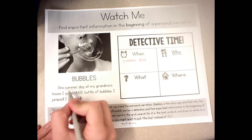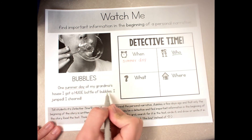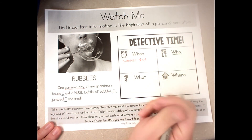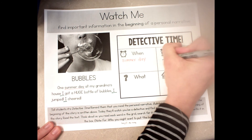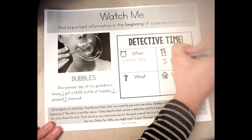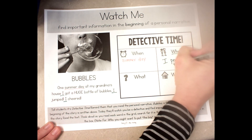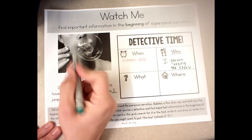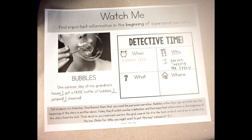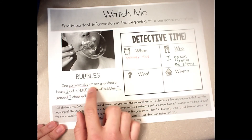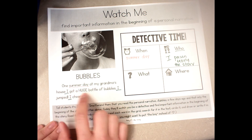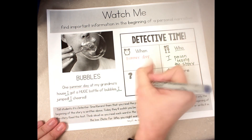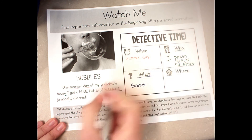Now I'm going to look for the who — who is this story about? 'One summer day at my grandma's house, I got a huge bottle of bubbles. I jumped. I cheered.' They say 'I' every time, so it's most likely that boy blowing the bubbles in the story. Ms. Chapman writes down 'I — the person telling the story,' because it's probably that boy in the picture. Now, what is this story about? What did he get? A huge bottle of bubbles! So we put down 'bubbles.'